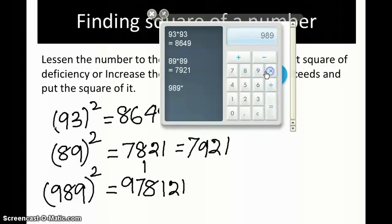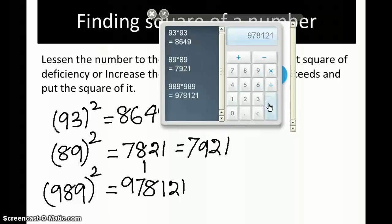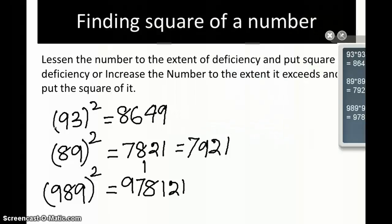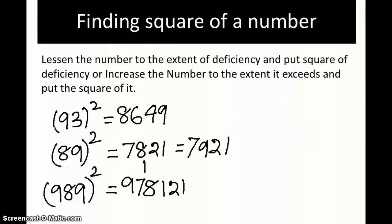989 into 989 gives 978121. You can see that with a single line we are able to write the answer to this — so how effective it is!